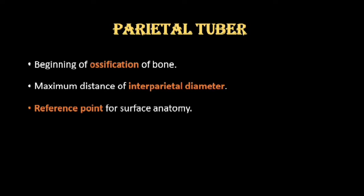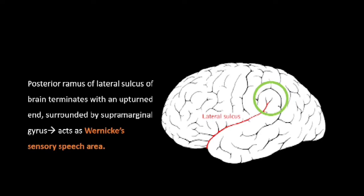That means if you want to mark a point, you can say this point is such-and-such centimeters from the parietal tuber — so it is a reference point for surface anatomy. One more point to remember: in the diagram, the red line represents the lateral sulcus, and the posterior ramus of the lateral sulcus of the brain terminates with an upturned end surrounded by the supramarginal gyrus, shown by the green circle. This is a key sensory speech area seen just beneath the parietal tuber.